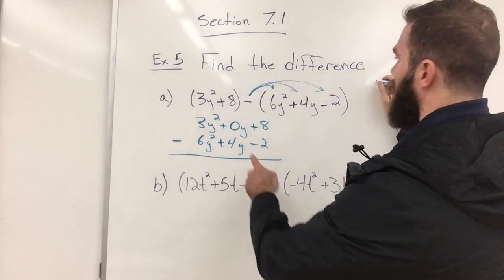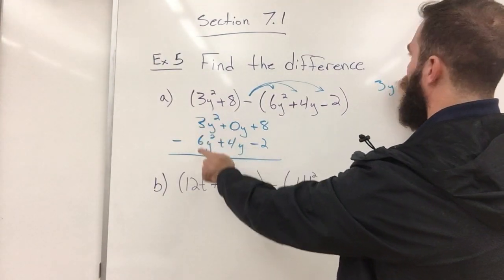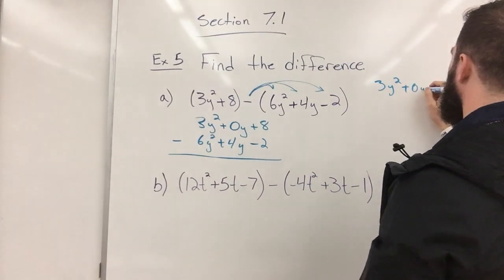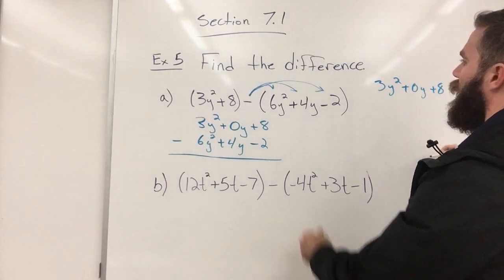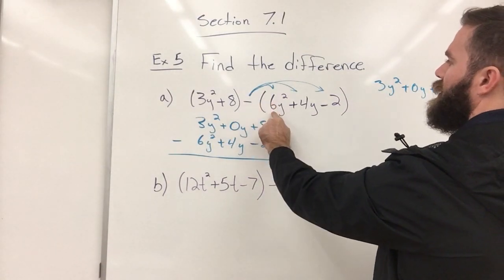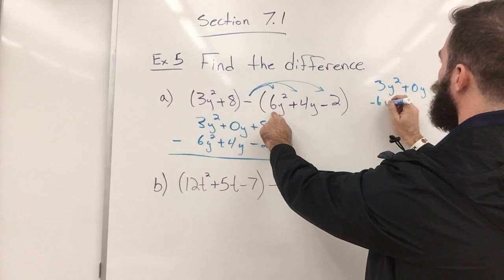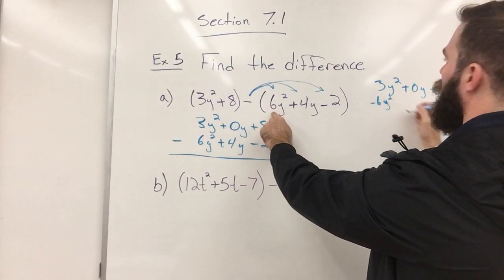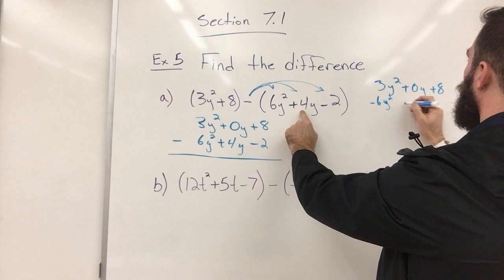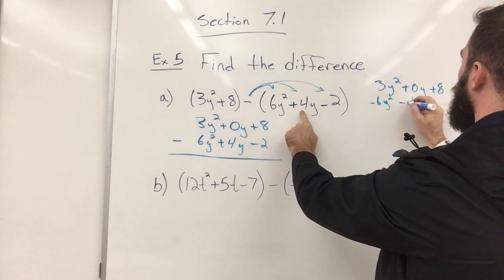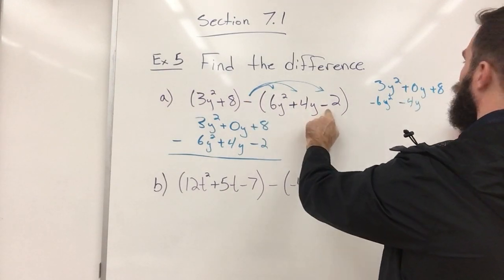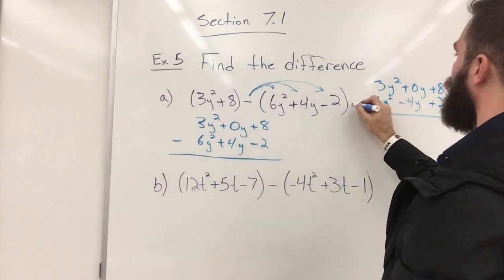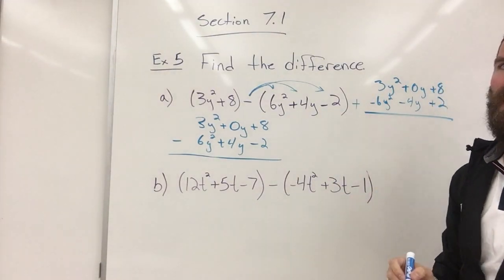So again, we'll do the top and then I'm going to do a negative times the 6y is a negative 6y squared, negative 4y, negative negative is a positive 2, and then I can just add these. Either way, it doesn't matter.